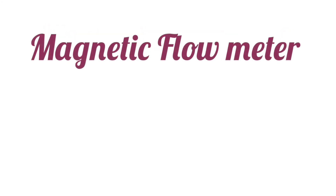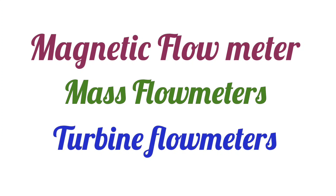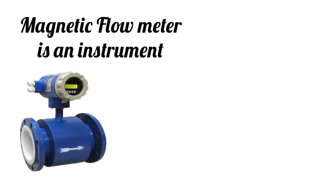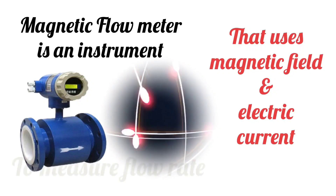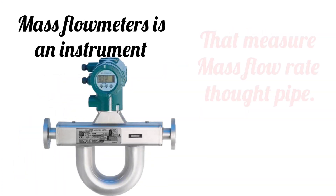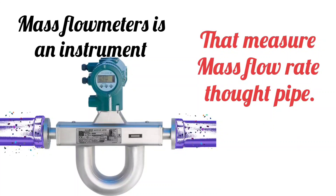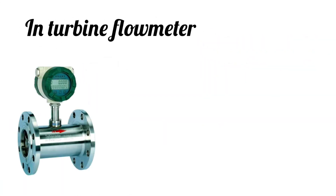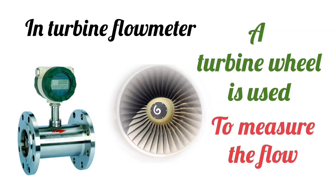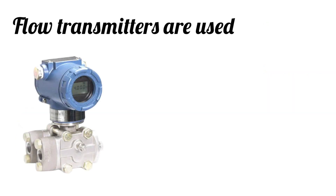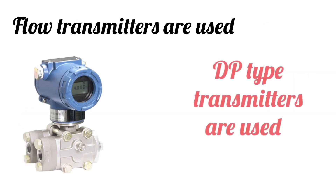Flow meters are used, such as magnetic flow meters, mass flow meters, and turbine flow meters. A magnetic flow meter measures flow rate using a combination of magnetic field and electric current. A mass flow meter measures the mass flow through the pipe. In a turbine flow meter, a turbine wheel is used to measure the flow. In addition to these, flow transmitters are used — specifically, DP type transmitters used with an orifice plate.